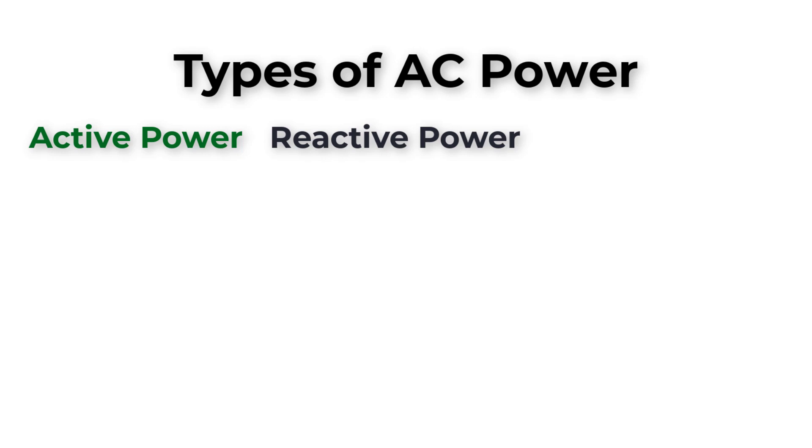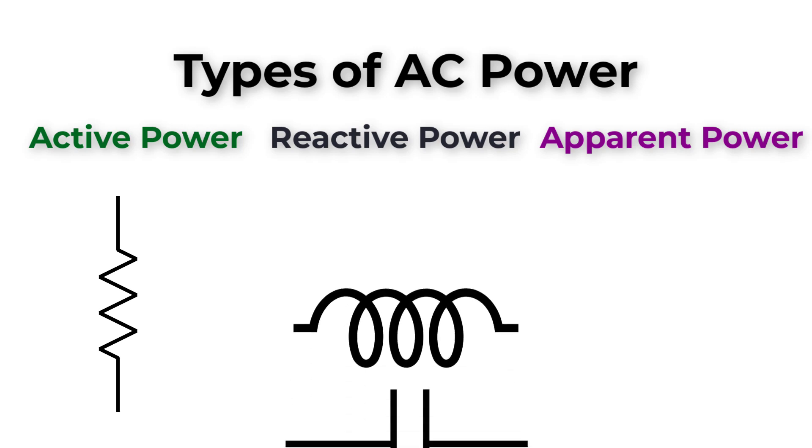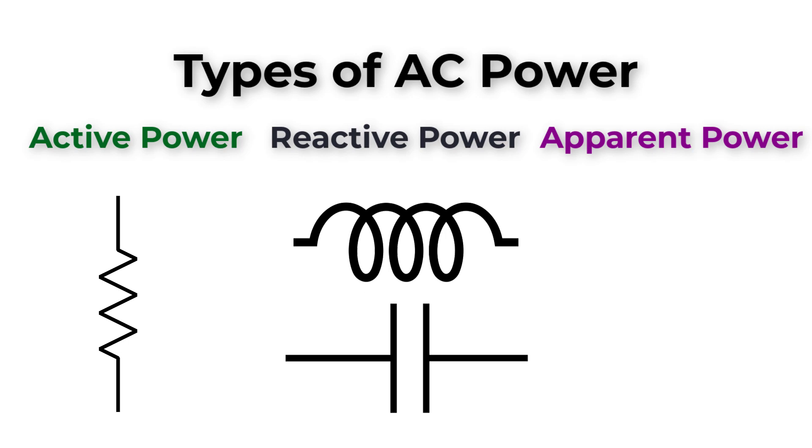reactive power, and apparent power. Active power is consumed by the resistive load. Reactive power is consumed by inductive or capacitive load. And the apparent or complex power is the total power consumed when we have a mixture load. You can watch the video of Power Factor through this link or in the description down below.